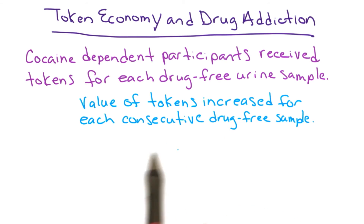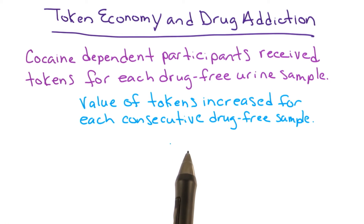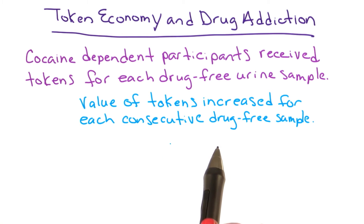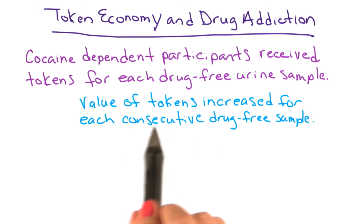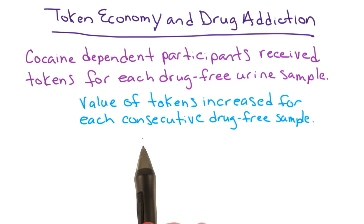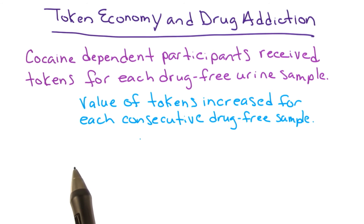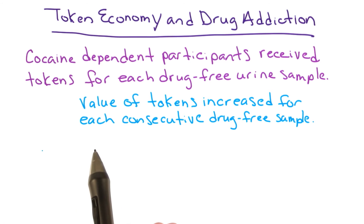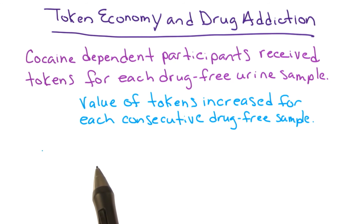For example, perhaps the first token was worth 25 cents. If they provided a drug-free urine sample the next day, it would increase to 50 cents, and on the third day to 75 cents. Remember, these were just tokens — they didn't earn actual money. This was partly to ensure the tokens could be exchanged for appropriate items, and not risk participants using money to go out and buy drugs.